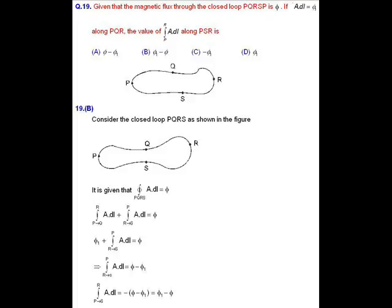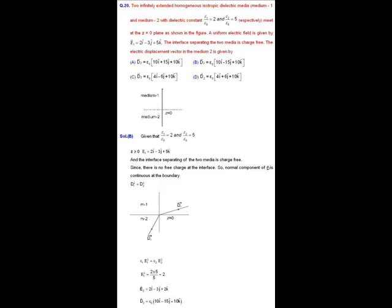That implies line integral from R to P along RSP A dot dl equals to phi minus phi 1. By interchanging the limit of the integral P to R along PSR A dot dl equals to phi minus phi 1, that is equal to phi 1 minus phi. So the required magnetic flux from P to R along PSR path is phi 1 minus phi. Option B is correct.